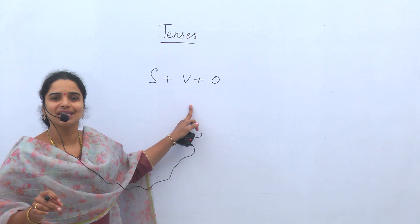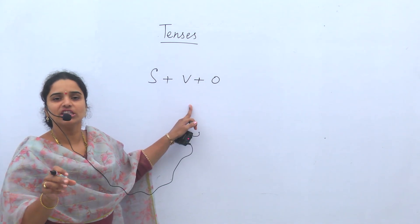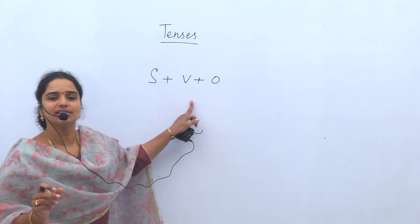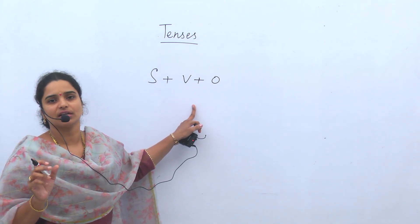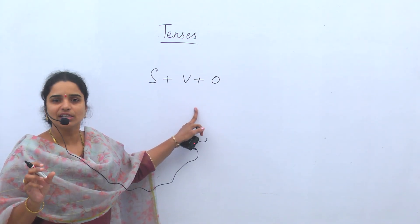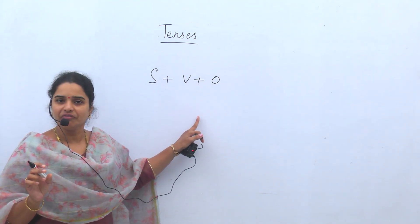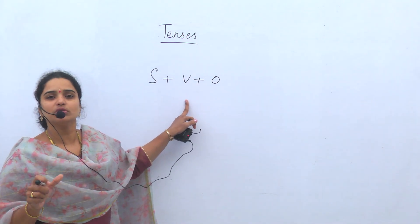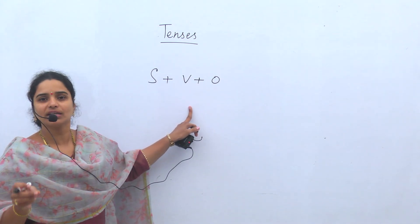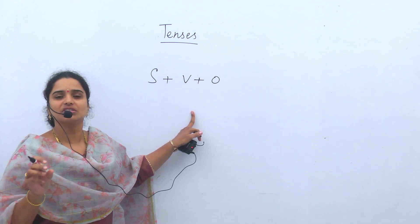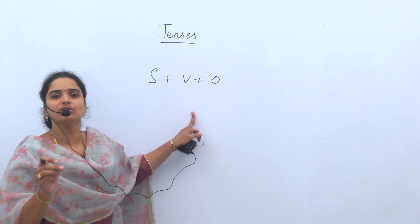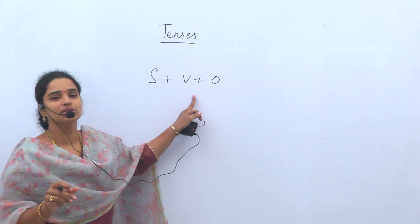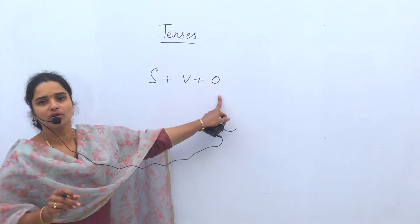The verb represents an action. To understand whether the action happened, is happening, or will happen, by understanding the verb we can understand this. In English, verbs have three forms: V1, V2, and V3. Whether to use V1, V2, or V3 — it depends on the structure of the sentence and it depends on the tense. Based on that we have to select the verb and the object.